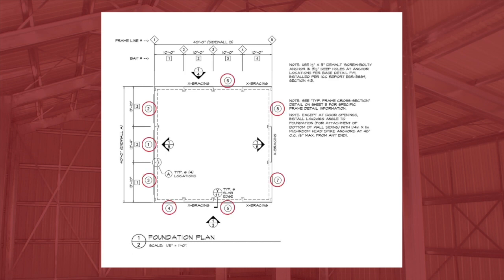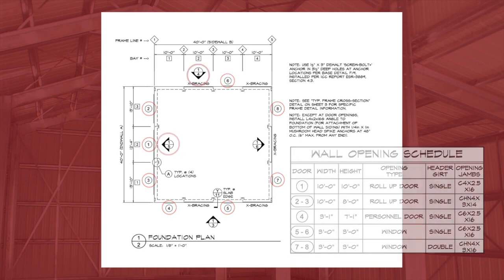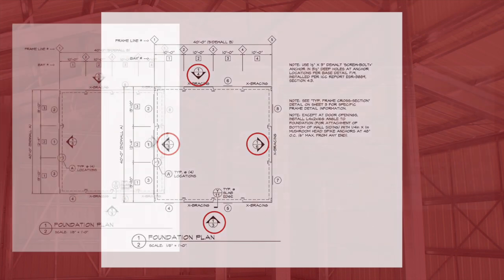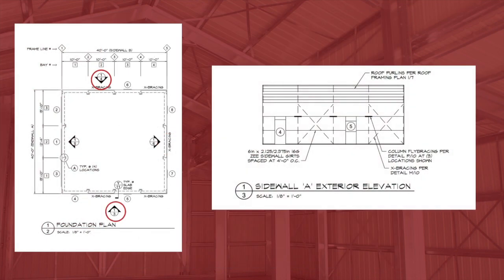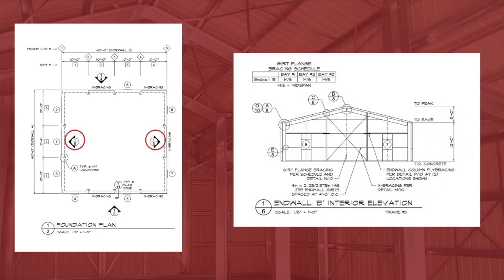Doors on the plans and elevations are indicated by a number in a circle, and correspond to the information on the door and window schedule. On the foundation plan, you will see a set of circles with a number inside and dark arrows. The number tells us which detail drawing is referenced by the arrow, and the direction of the arrow tells us how these elevations are viewed. Side wall elevations are exterior views showing the building from the outside, while the end wall elevations are interior views showing the building from the inside.